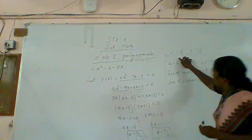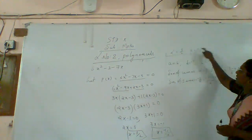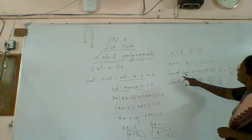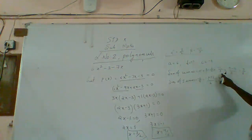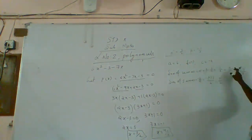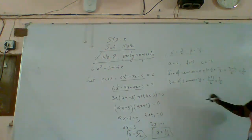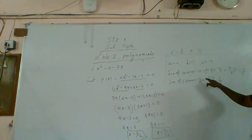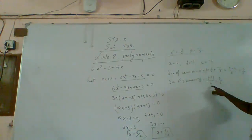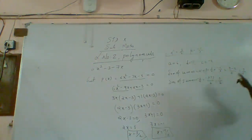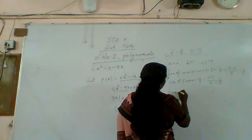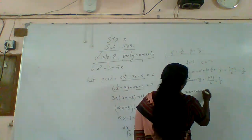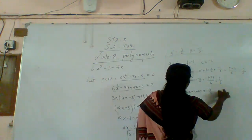Our zeros are alpha equal to three by two and beta equal to minus one by three. Sum of the zeros: alpha plus beta equals three by two plus minus one by three. Taking LCD six: nine minus two over six, which is seven by six. By formula: minus b by a equals minus of minus seven divided by six, that is seven by six. Both give seven by six, therefore sum of zeros equals minus b by a — verified.